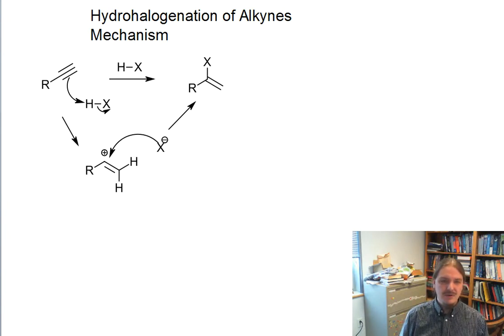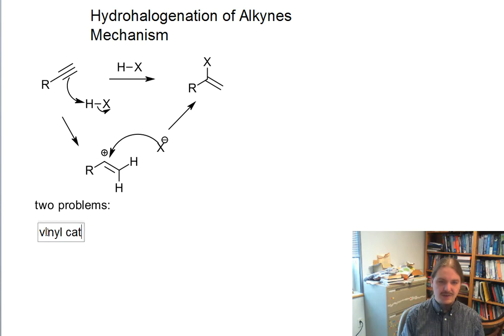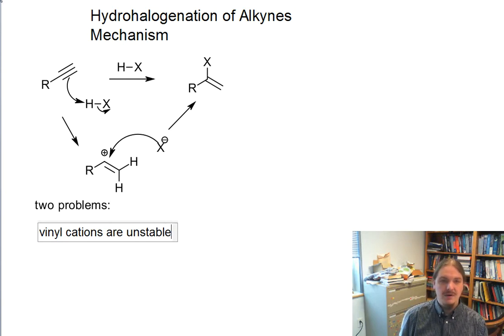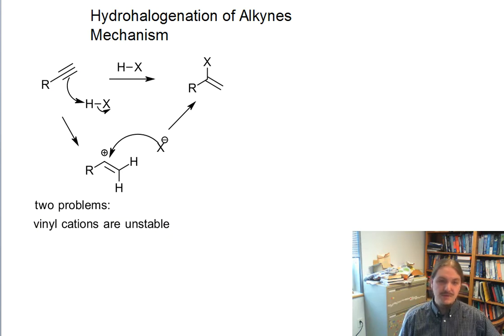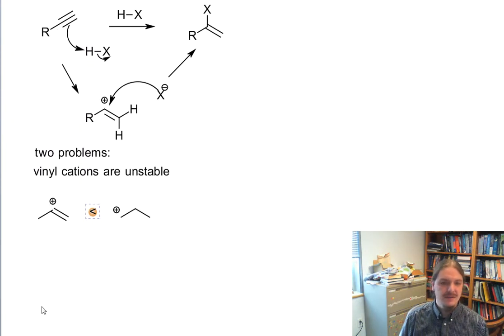There are, however, two problems with this mechanism. First is that the vinyl cations, and that's what this intermediate would be, are unstable. There's some research on trying to produce and study these things before they react. And these vinyl cations are generally considered to be less stable than primary carbocations. And we all know that primary carbocations are to be avoided under the best circumstances.